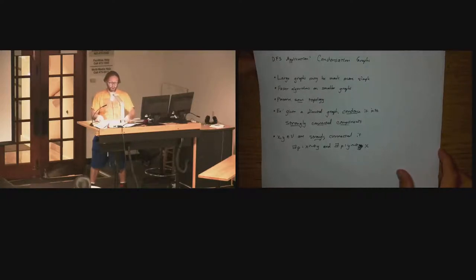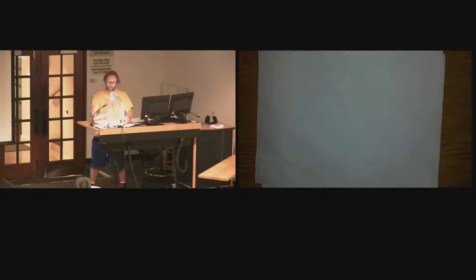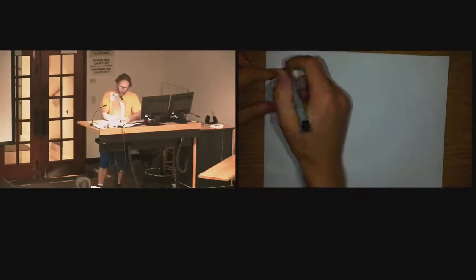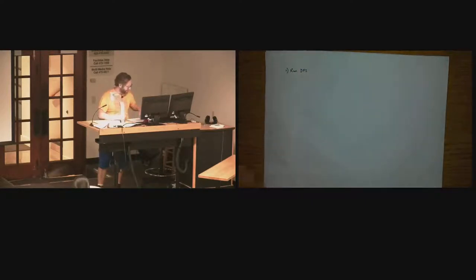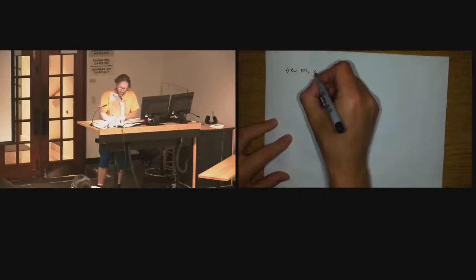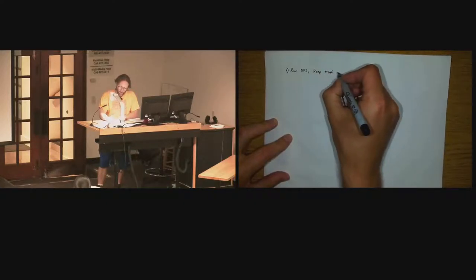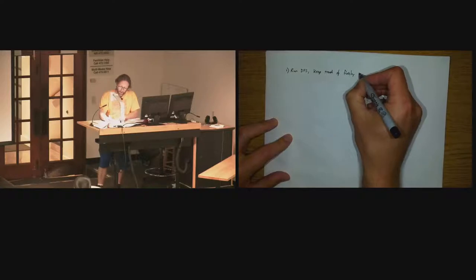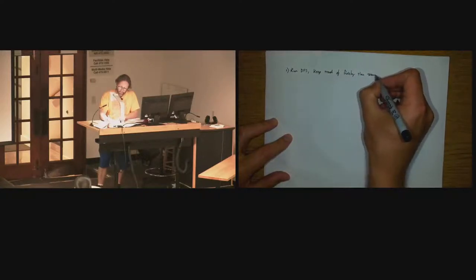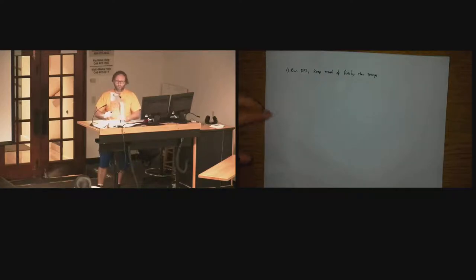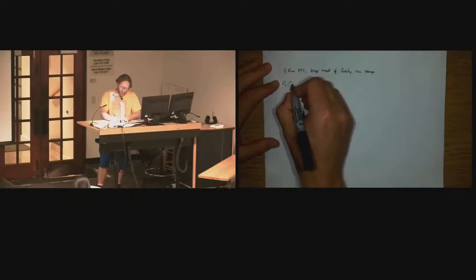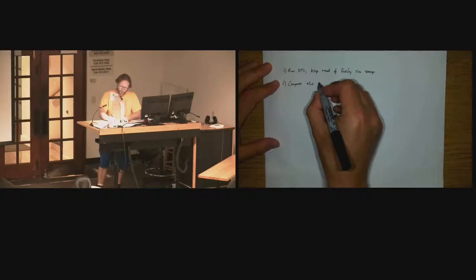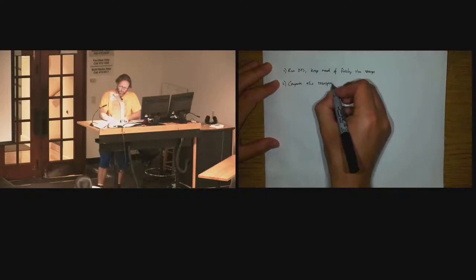Here's the idea for our algorithm. It's an application of DFS. All we're going to do is run DFS and make special note of the finishing timestamps. Keep track of finishing timestamps. This is one of the artifacts that we built when we ran DFS. Then step two, we're going to compute what's called the transpose graph, and we'll use G-transpose here.